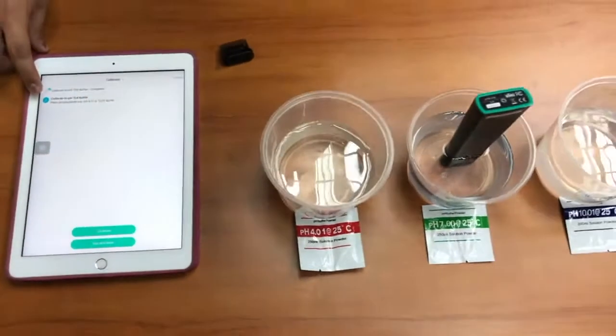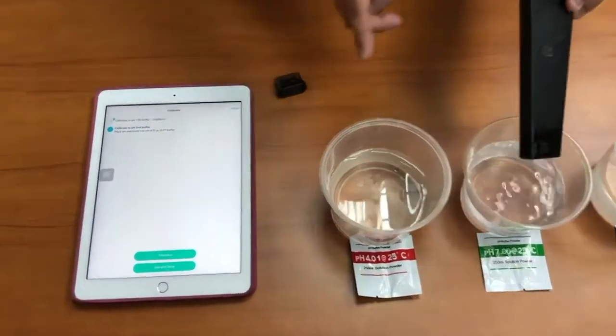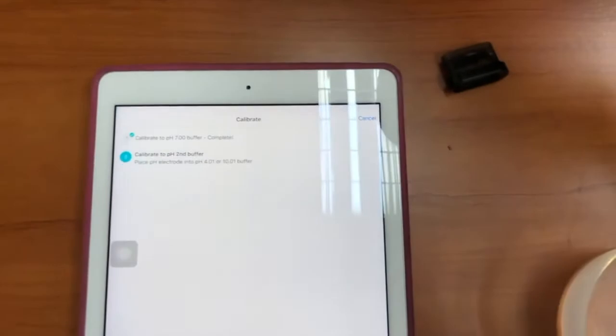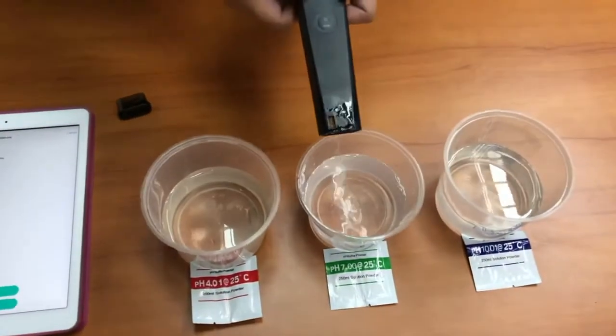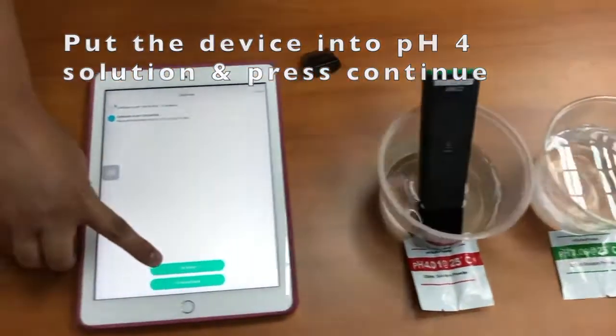Now we're going to go to the second step, which is to calibrate to the second pH buffer. We can choose either pH4 or pH10. Now I place this pH meter into pH4. Let's place it first and continue with calibration.